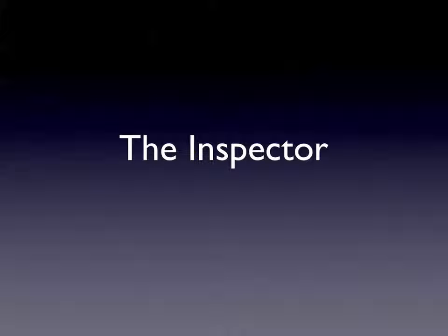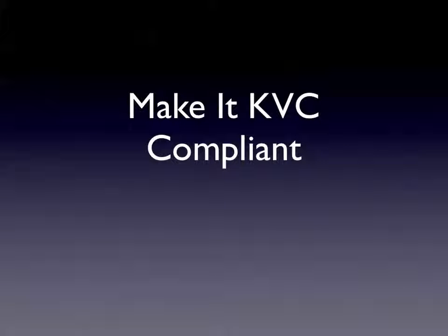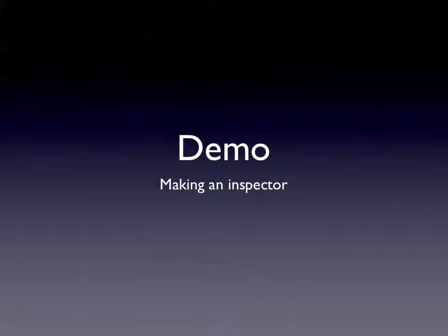Now let's take a look at the inspector. So far we haven't done anything with it — we've just been letting the object retain its defaults. The inspector ties into your object through Cocoa bindings. In order for your object to be binding-compliant, it needs to be key value coding compliant — if you're using the Cocoa standards for naming your variables and properties, you're already doing this. To hook your inspector up to your object, you need to bind to properties of the inspected object controller's selection property. The inspected object controller is a special object within Interface Builder — an array controller representing the currently selected objects.